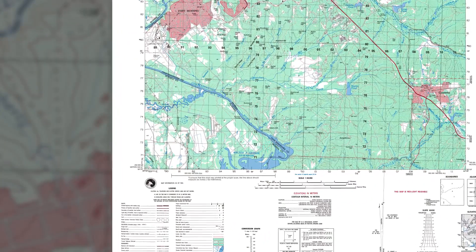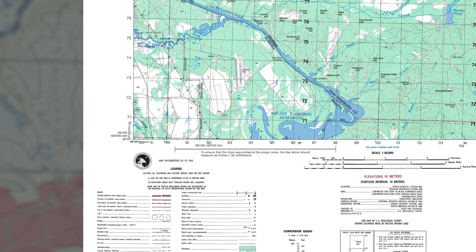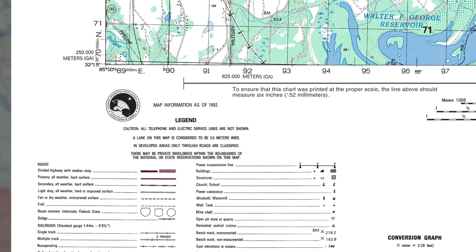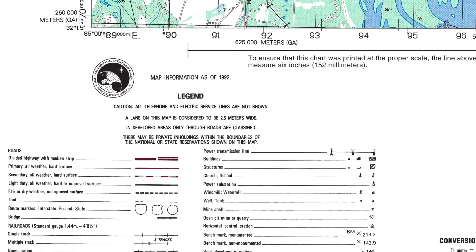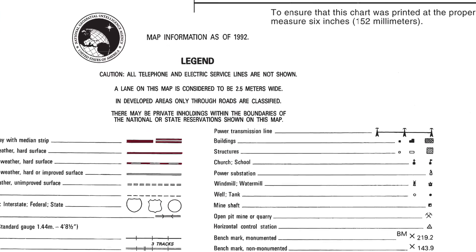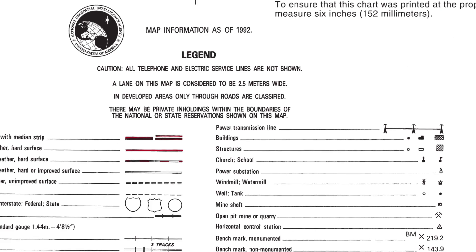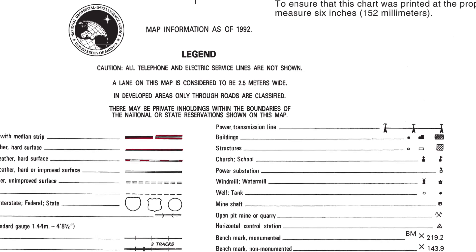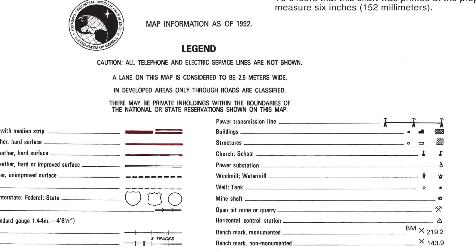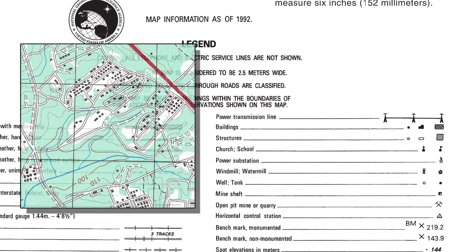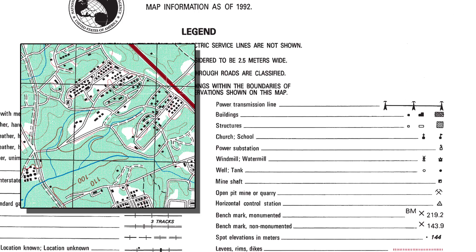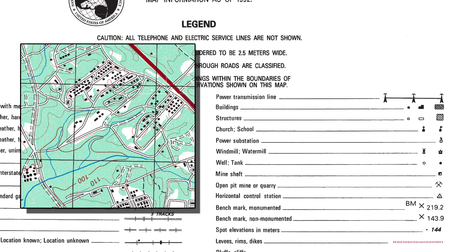Identifying symbols is another important aspect when using a military map. Using the legend, you should identify most of the symbols used on the map. Learn to identify each object by its shape on the map. For example, a black solid square represents a building or house.